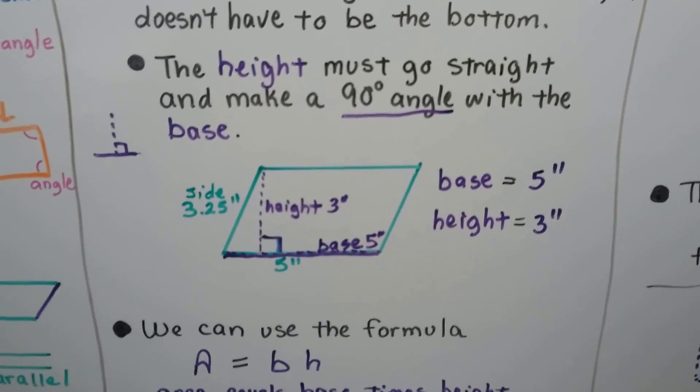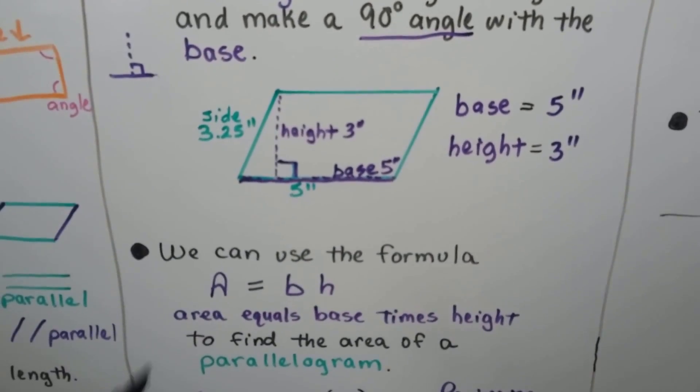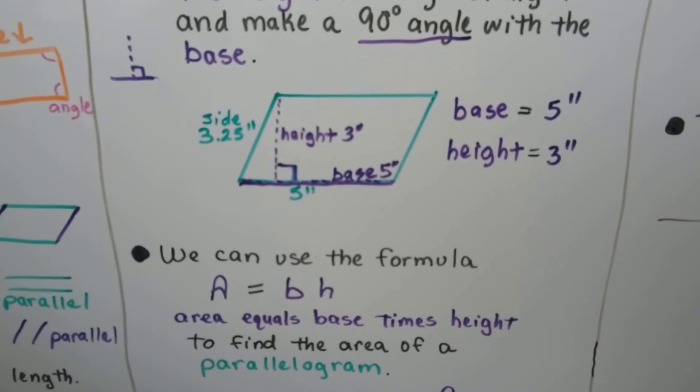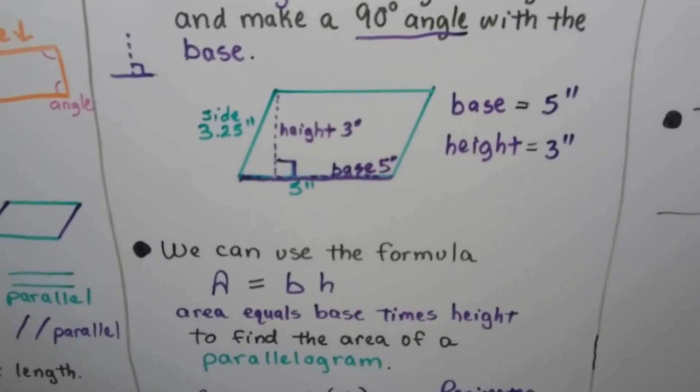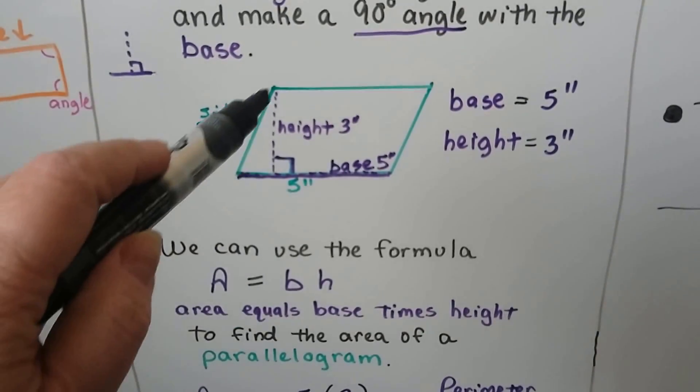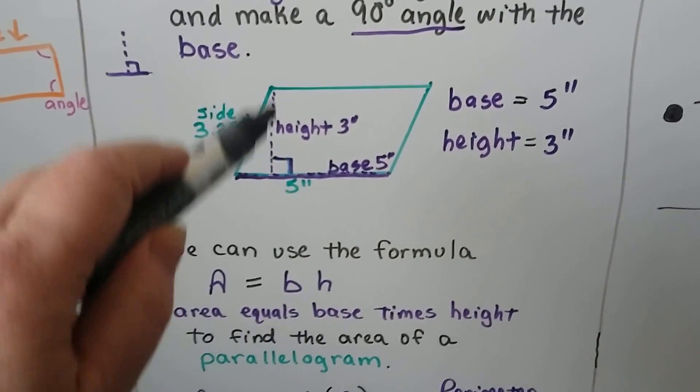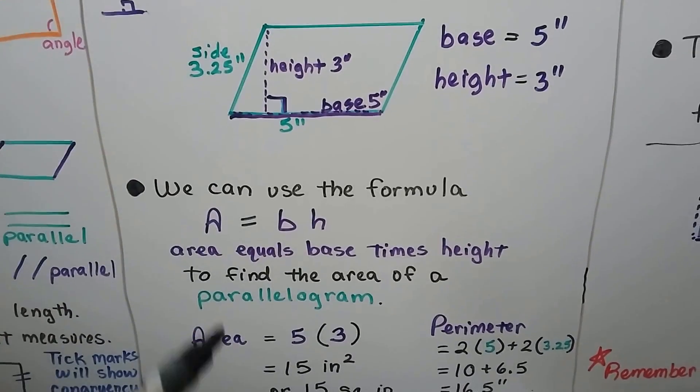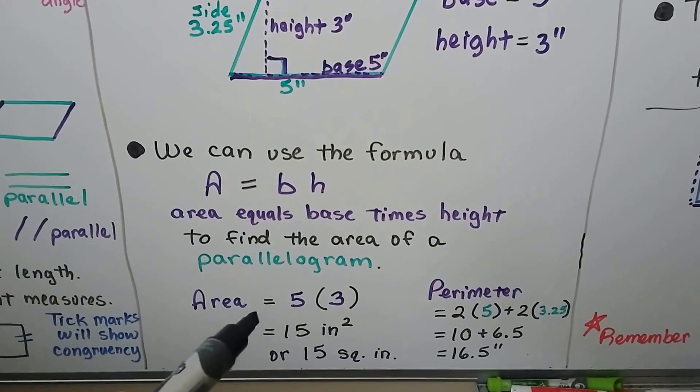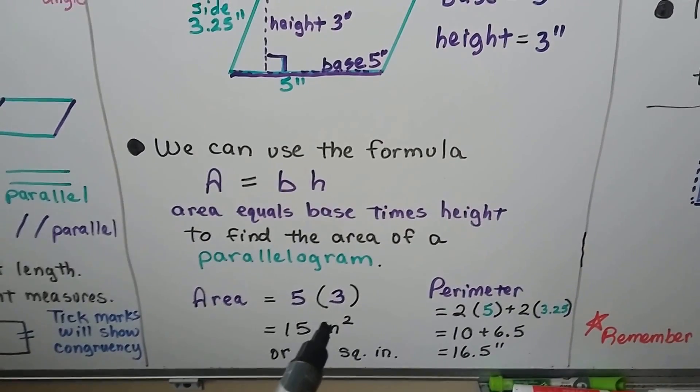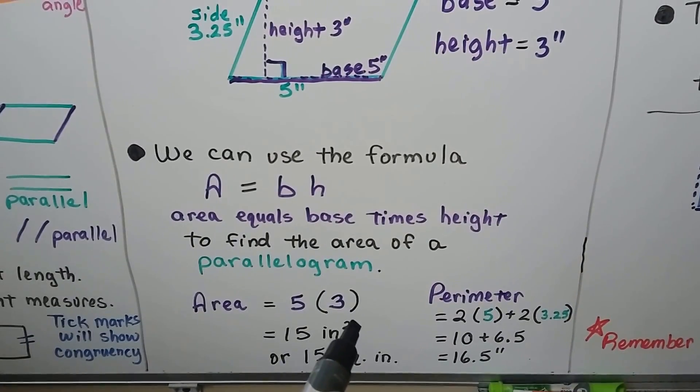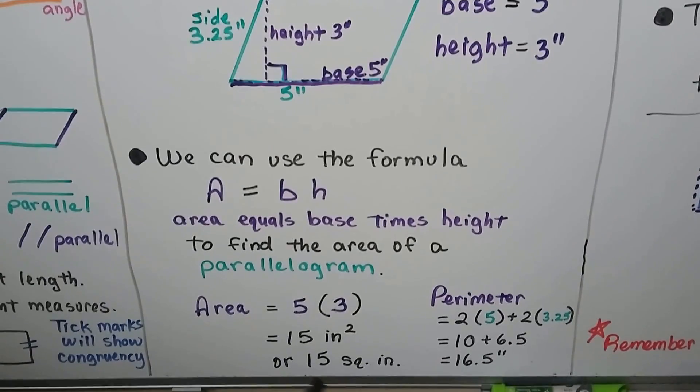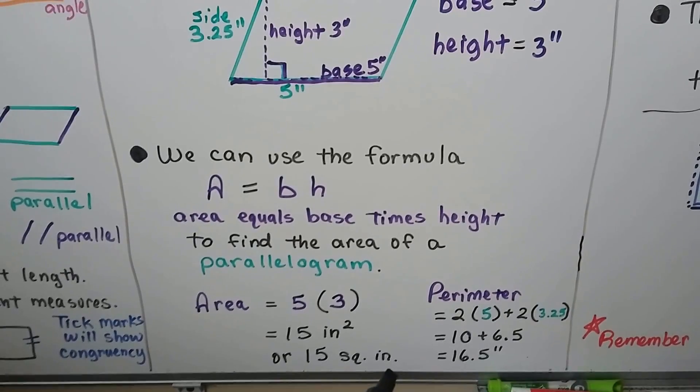We can use the formula A equals BH. It means area equals base times height to find the area of a parallelogram. So we make a perpendicular line here, and we do the base times the height. We would do five times three. That would give us 15 inches squared. We've got a little two exponent here that's telling us it's two measures, base and height. Or we could say it's 15 square inches.